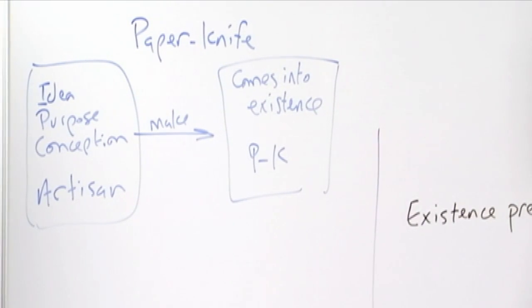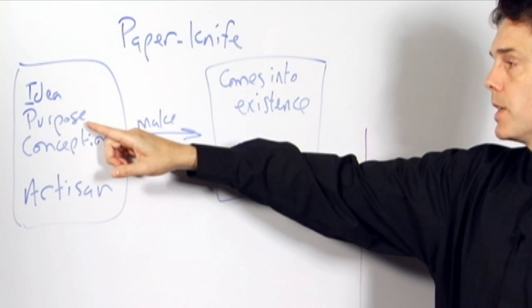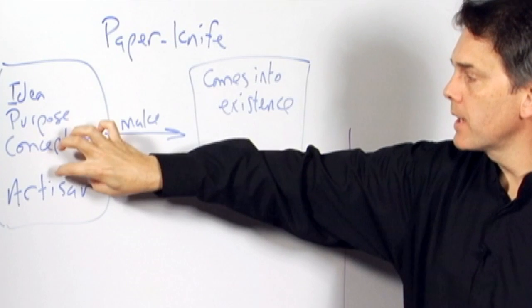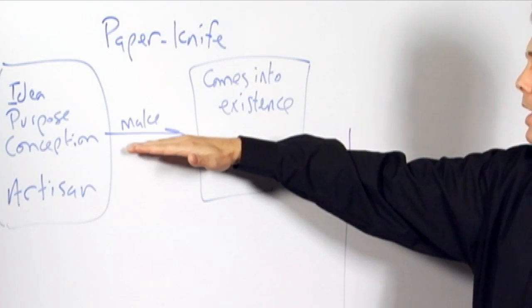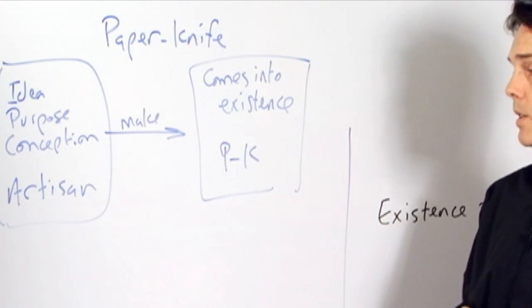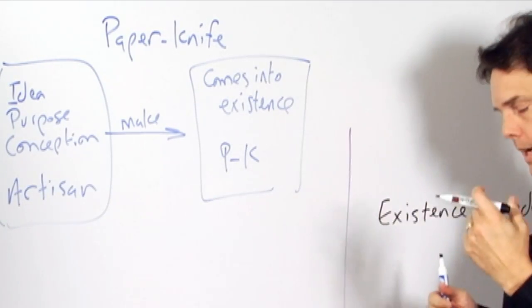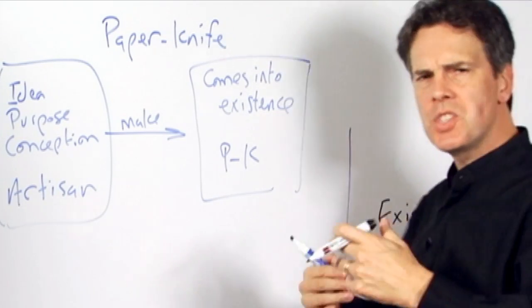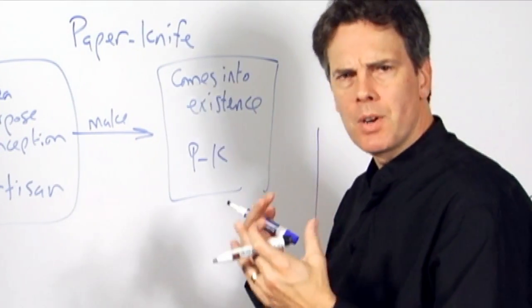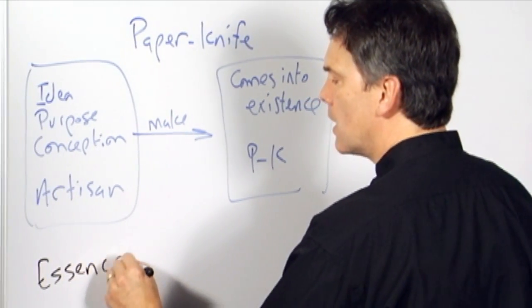So the story of the paper knife then is that an artisan has an idea based on a purpose that he wants to achieve, forms a conception, then on the basis of that conception, engages in an action of production, and the paper knife then comes into existence. Now what Sartre is going on in the passage to say is that what we mean by the essence is this stuff here. What is it to be a paper knife? What's the idea of a paper knife? What's the purpose of a paper knife? All of that is, and how would we make paper knives if we're going to bring them into existence? That is the essence of what it is to be a paper knife.